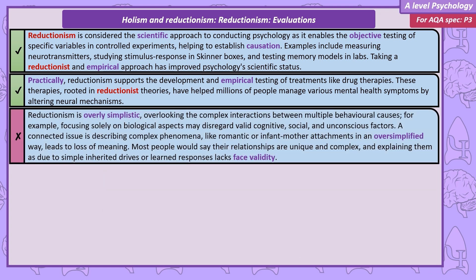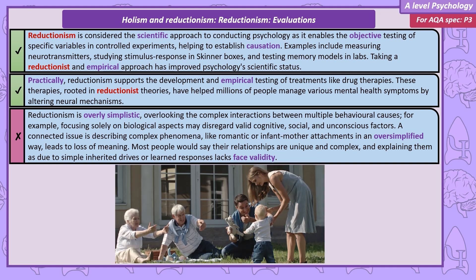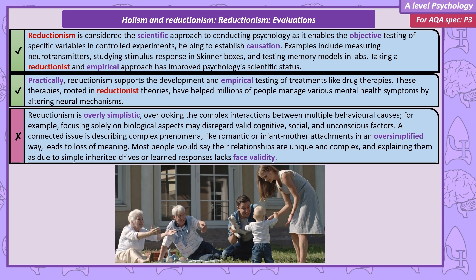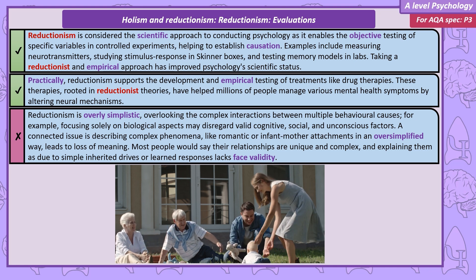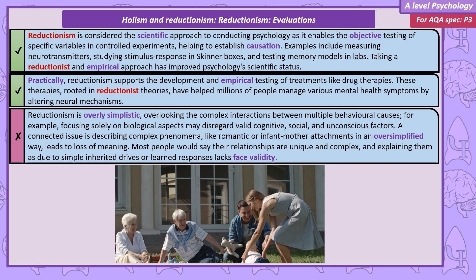Many psychologists argue that taking a completely reductionist approach to any behaviour is too simplistic. By focusing on only one variable at a time, a reductionist approach ignores other potentially valid explanations and the way that multiple causes of behaviour might interact. A focus on biology might overlook the importance of cognitive processes, and a focus on stimulus-response learning may ignore the role of inherited instincts, social factors and the unconscious. Viewing the brain like a computer is limited as the mind experiences emotions and has reconstructive and inaccurate memory. We could also argue reductionism leads to a loss of meaning — describing the formation of romantic or infant-mother relationships as simply a set of inherited drives or learnt responses to stimuli doesn't have face validity. It simply can't fully explain the experience of forming and experiencing an attachment.